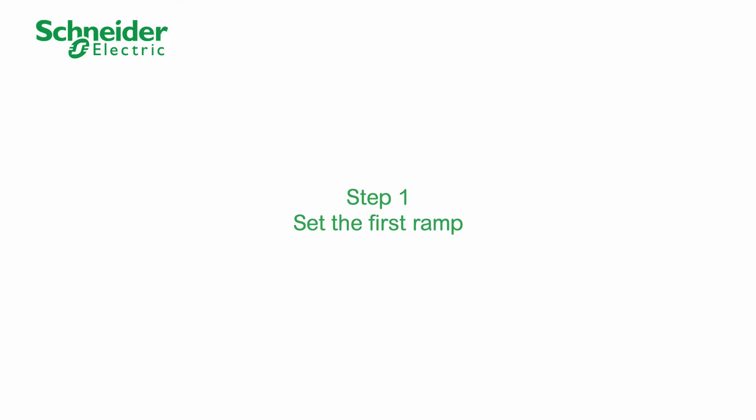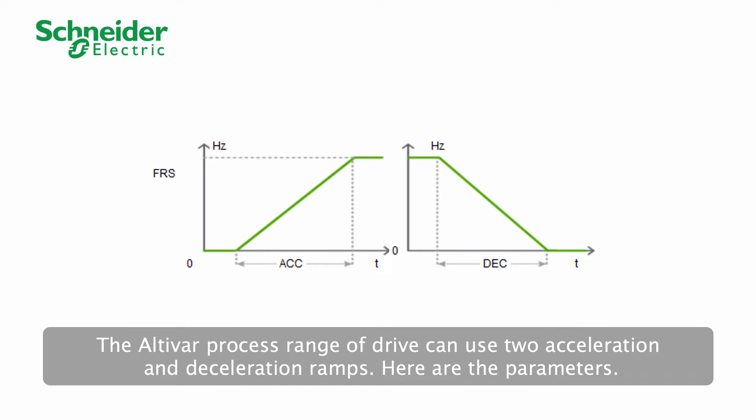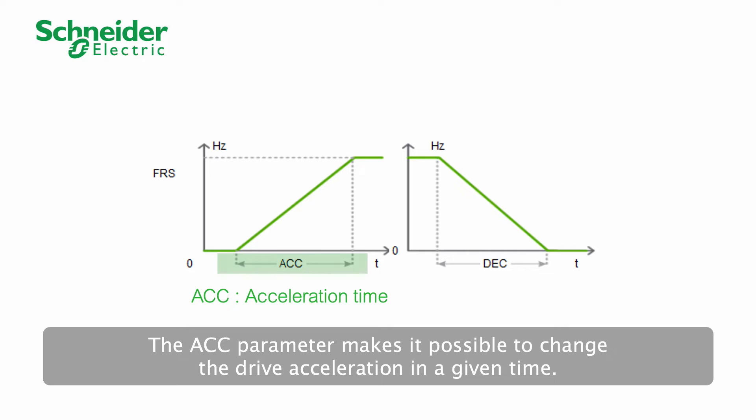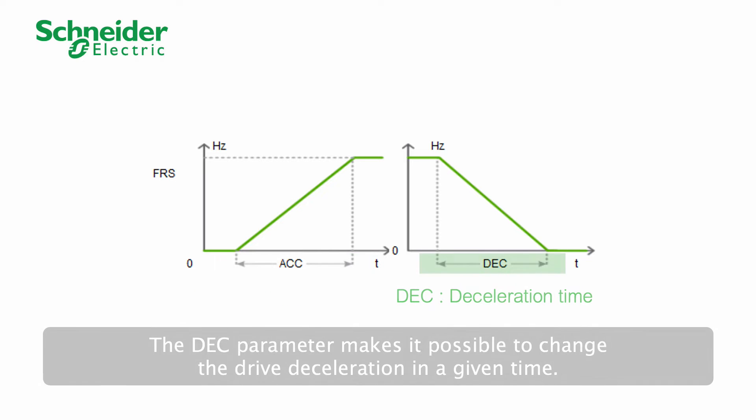Set the first ramp. The Altevar Process range of drive can use two acceleration and deceleration ramps. Here are the parameters. The ACC parameter makes it possible to change the drive acceleration in a given time. The DEC parameter makes it possible to change the drive deceleration in a given time.